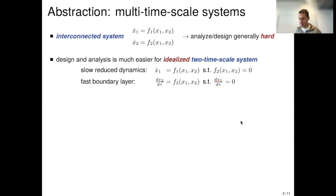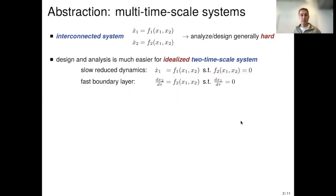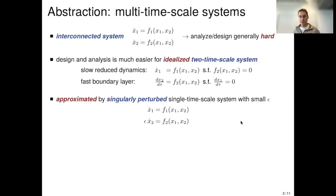On the fast timescale, x1 does not change, and the fast system quickly converges to its equilibrium given by f2 equals zero. Then the slow dynamical system evolves as x1-dot equals f1(x1, x2), assuming the second vector field is at equilibrium. Clearly this idealized setting makes things easier, but as we've seen, when you implement this in algorithms you run into nested iterations. The approximation of this two-timescale system on a single timescale is through singular perturbation methods, where the second system has a small time constant epsilon.